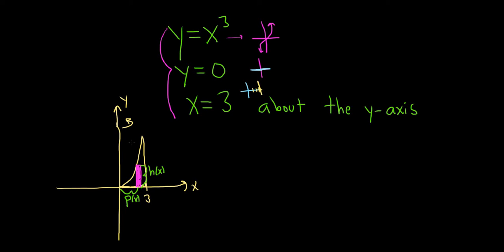So h of x is simply going to be x cubed, because this graph here is x cubed. So h of x is equal to x cubed. And then p of x is just going to be x. So p of x is equal to x, because this distance is just x. No matter where you put the rectangle, that distance is x.